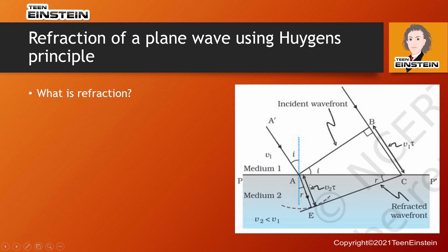We want to understand what happens when light falls on a medium. There are two things that can happen: one, the light passes through the surface and goes into the next medium; the other is where the light gets reflected and goes back into the same medium. Here we are going to consider refraction, where light falls on a surface, passes through medium 2, and crosses the interface between medium 1 and medium 2.